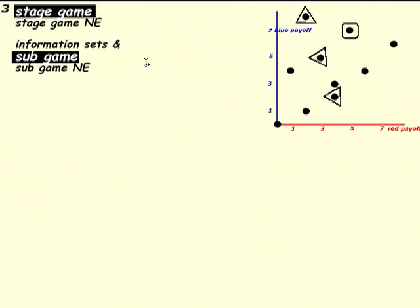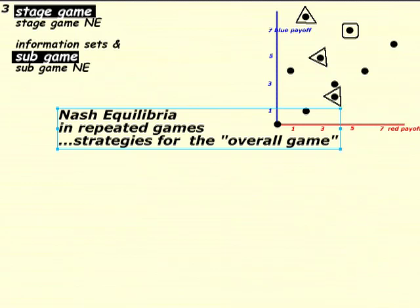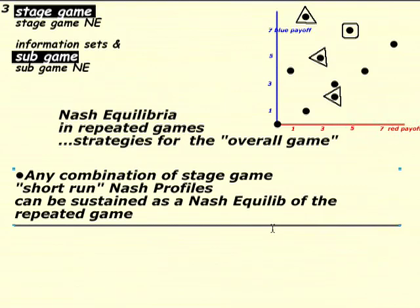We started off with the idea of a repeated game and introduced a new concept called the stage game — the basic game being repeated. We tried to keep things simple using a two-by-three game, but it could be anything: the chicken game, the battle of the sexes, the assurance game, the entry-deterrence game, the prisoner's dilemma. We then thought about payoffs as sums — the total a person gets. What we found is that Nash equilibria in the overall repeated game can come from Nash strategies in each stage game.